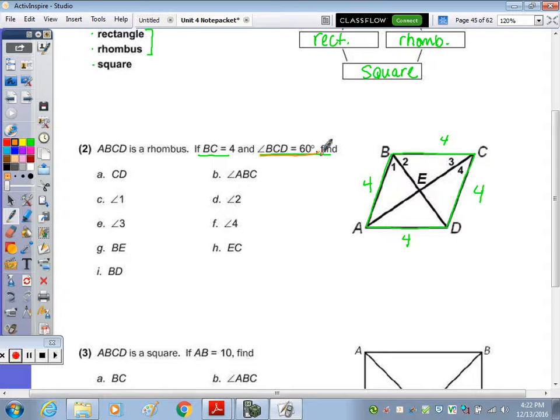With BCD being 60, if I trace that, BCD, this whole angle is 60, but I know this diagonal is going to bisect that. So this is 30, and this is 30. Opposite angles are congruent, so this is 30 as well, those two angles.